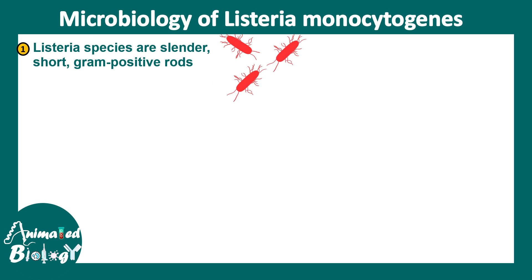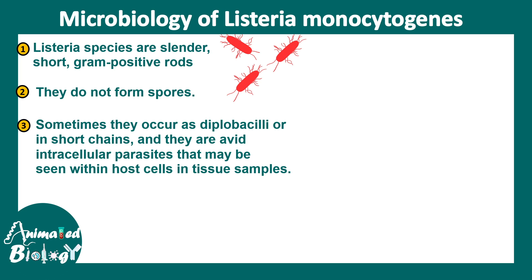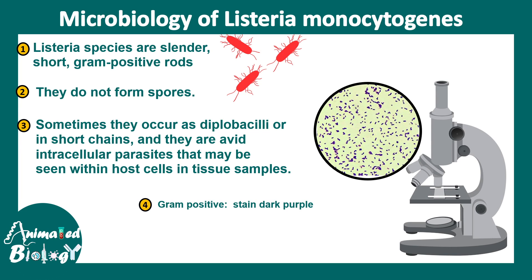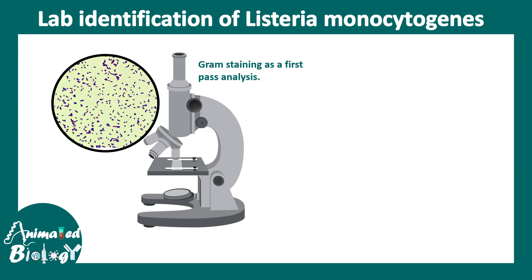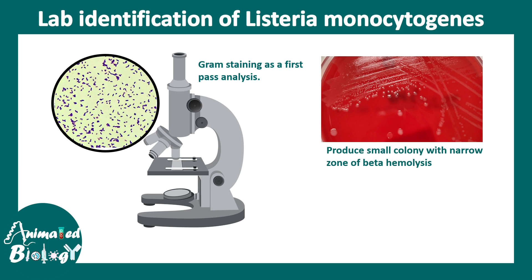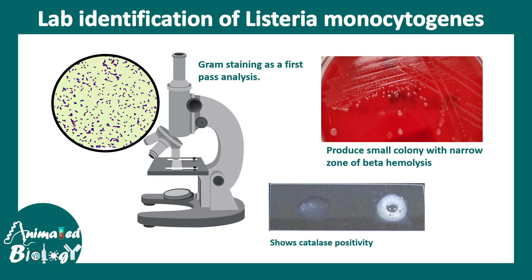Listeria species are basically slender, short, gram-positive rods. They do not form spores and are non-spore forming. Sometimes they can occur as diplobacilli or short chains, but they are avid intracellular parasites. Being gram-positive, they stain dark purple in the gram stain. They produce small colonies with a narrow zone of beta-hemolysis and also show catalase positivity.